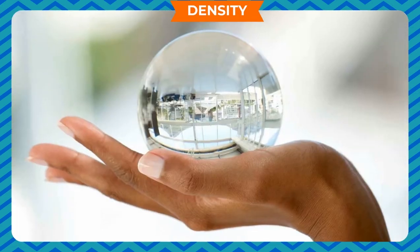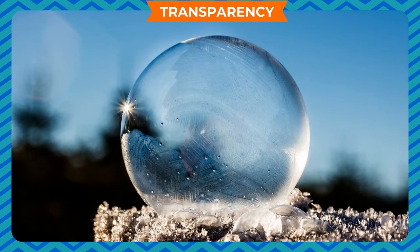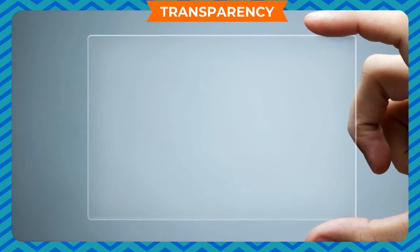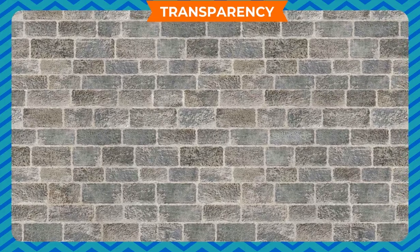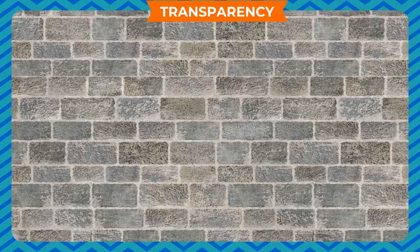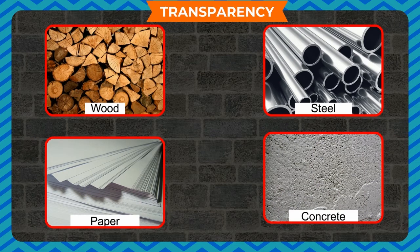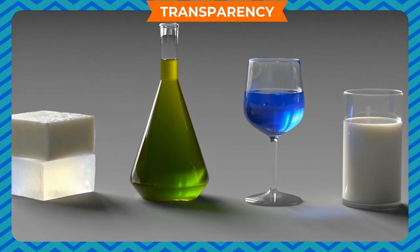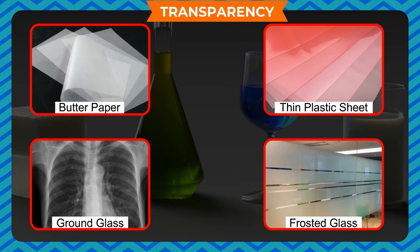Transparency: you can see objects through some materials easily. Materials through which light can pass easily are called transparent materials — examples are glass, air, and fresh water. Materials through which light cannot pass and through which you cannot see objects are called opaque materials. Materials through which light can pass only partially are called translucent materials — examples are butter paper, thin plastic sheet, ground glass, and frosted glass. Transparency is one of the important physical properties of materials.